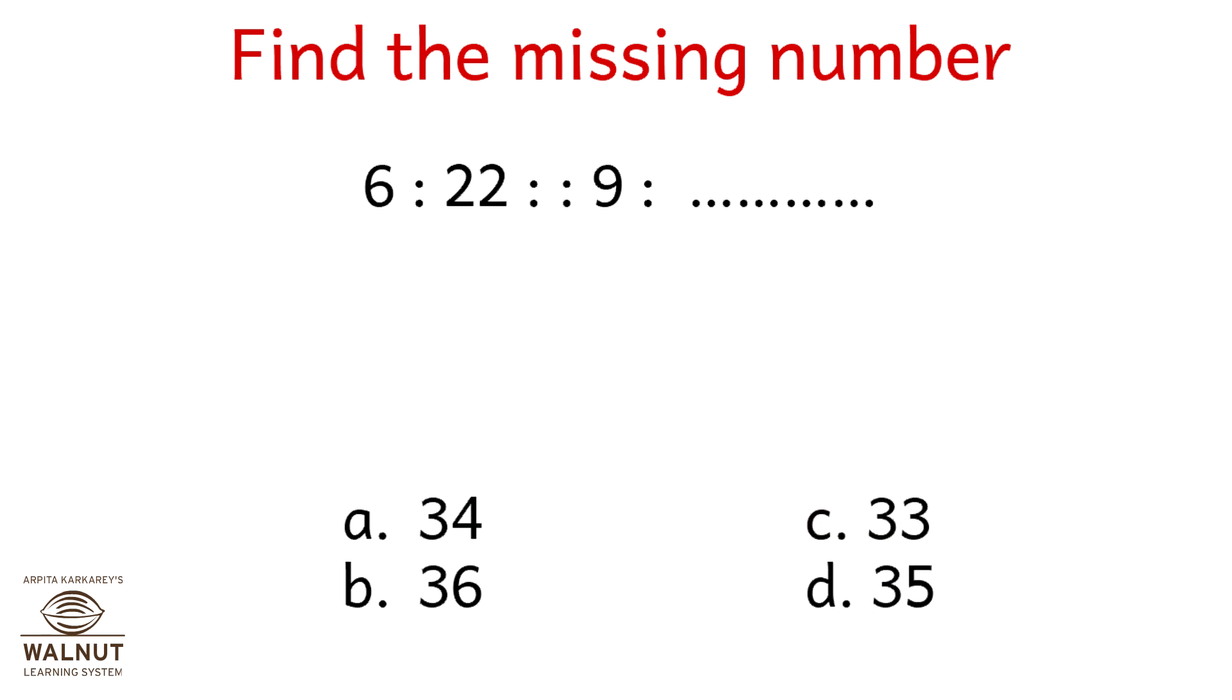6 is to 22 as 9 is to what? 6 into 4 is 24, 24 minus 2 is 22. 9 into 4 is 36, 36 minus 2 is 34. Yes, option a.